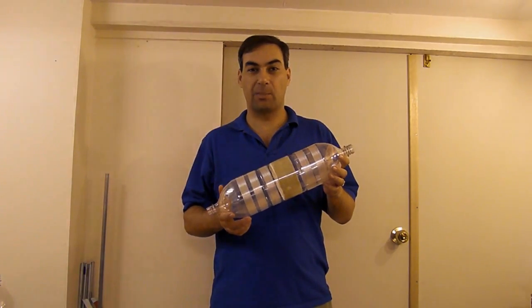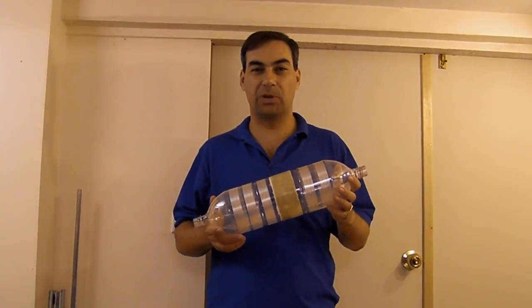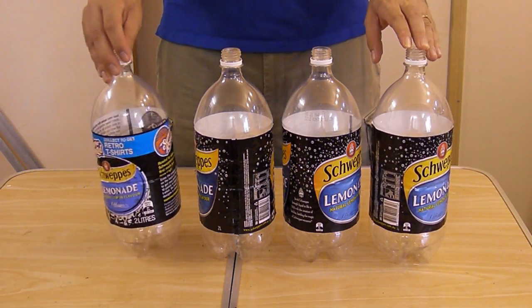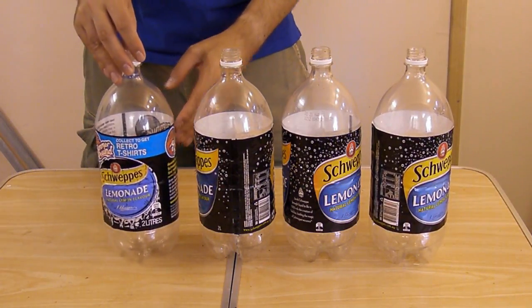Today we're going to show you how to splice a couple of bottles together using the asymmetric splicing technique. Start off with four equal sized bottles. We're using two liter bottles here but it'll work on any size bottle with straight walls.